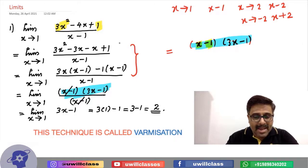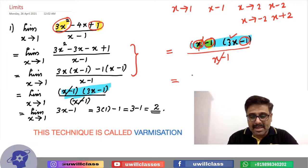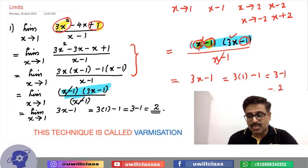I repeat it once again. First term, 3x squared divided by first term x, that is 3x. Last term plus 1, divided by last term minus 1, we get minus 1. And denominator is same, x minus 1. x minus 1 will get cancelled. 3x minus 1, 3 into 1 minus 1, that is 3 minus 1, that is 2.